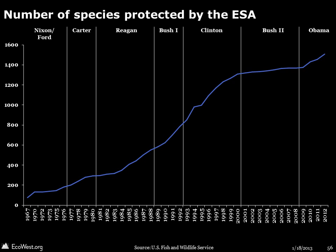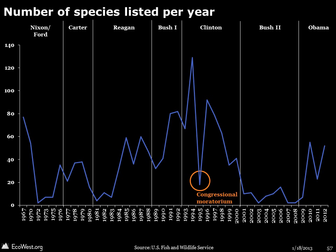This chart shows how many species have been listed as threatened or endangered on a cumulative basis. Although the ESA was enacted in 1973, some species were listed under a precursor to the law in the late 1960s. Species are supposed to be added to the endangered list solely on the basis of biology and whether they're endangered, regardless of their economic impact. But many studies of the Act have found that politics frequently intrudes into the listing process. If you overlay the terms of US presidents, you can see that listings really leveled off during the second Bush administration.